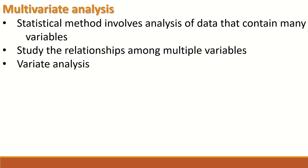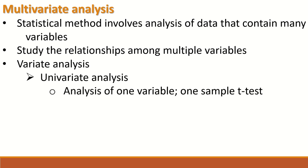Variate analysis can be sectioned into three parts. The first is univariate analysis, which is the analysis of one variable. When you have one variable or one set of data, the analysis will be univariate analysis. An example of a statistical method for this is the one-sample t-test.